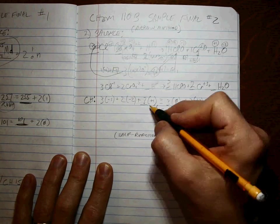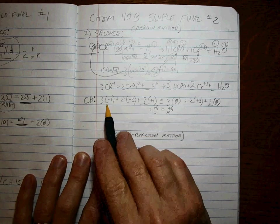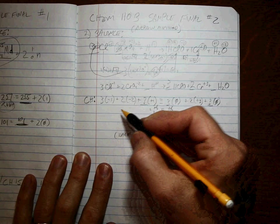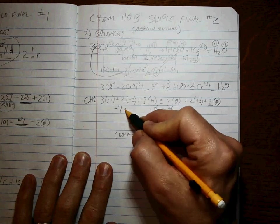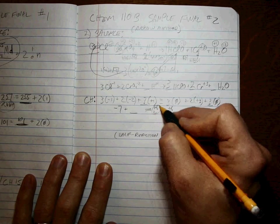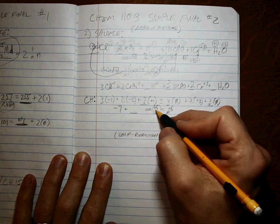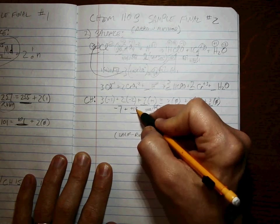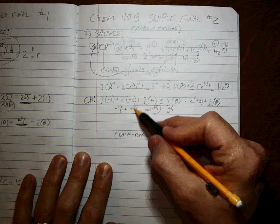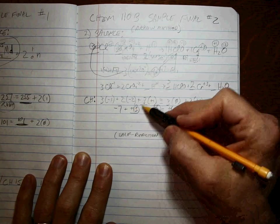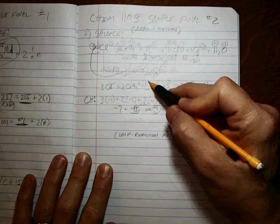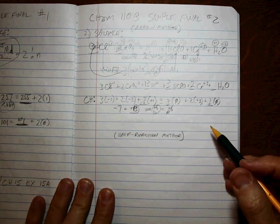So the answer is, if this is minus three and this is minus four, that means minus seven plus something has to equal plus six. Well, doesn't that have to be plus thirteen? Because thirteen minus seven is equal to plus six. So thirteen is the coefficient on the H plus.